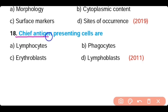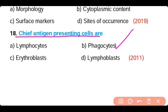Question number 18. The chief antigen-presenting cells are: lymphocytes, phagocytes, erythroblasts, or lymphoblasts. The correct answer is Option B. Phagocytes are the chief antigen-presenting cells.